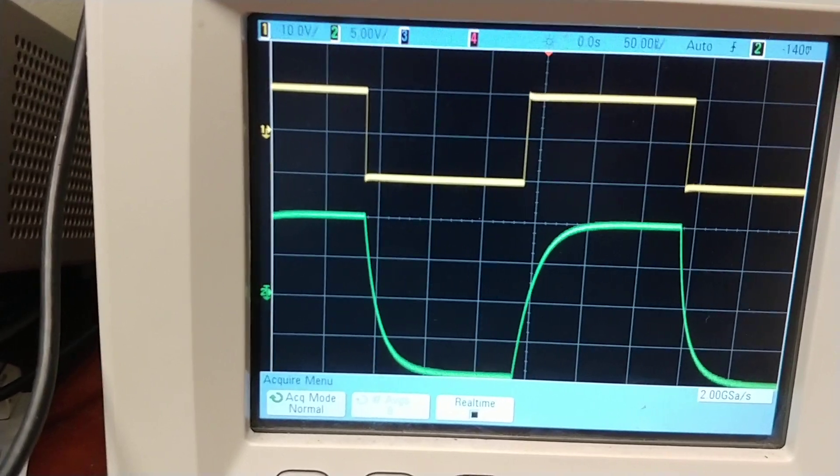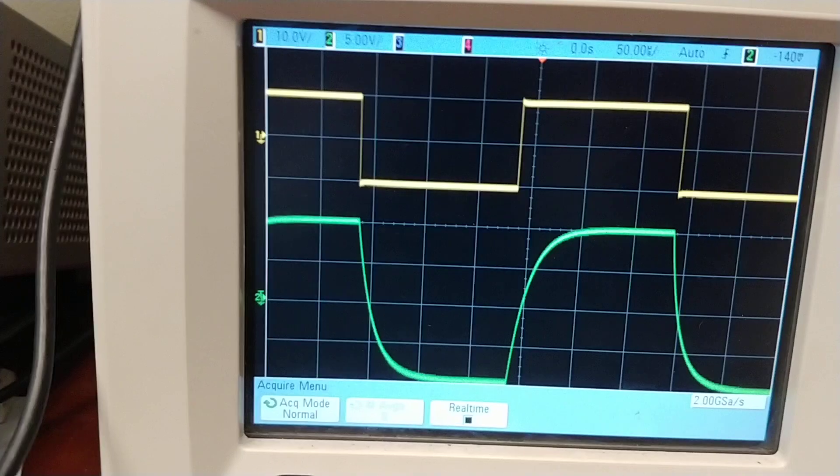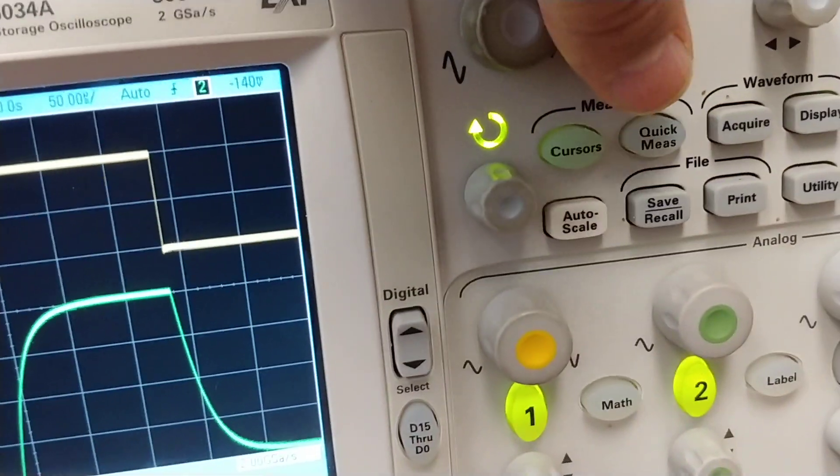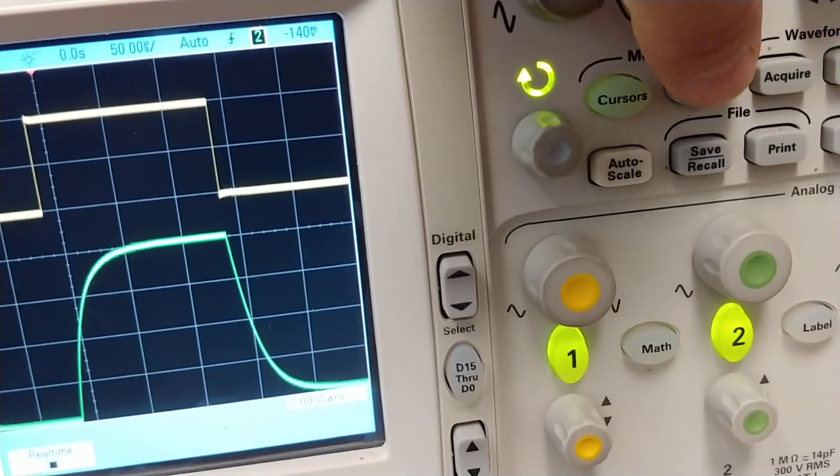Now the oscilloscope doesn't have a 5 tau measurement. It has a rise and fall time. Some scopes are different but they all have a measurement button that you would select.